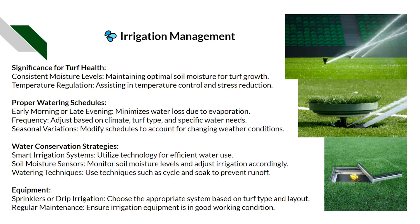Most irrigation systems like Hunter or Rain Bird allow you to adjust for seasonal variations — you can increase watering in summer and reduce it in winter using percentage changes on your system. Think about water conservation: smart irrigation systems can help us use less water. Using soil moisture sensors helps us know exactly what's in the profile, and techniques like cycle-and-soak — doing two minutes, waiting, then two minutes again — can prevent runoff while using less water overall.